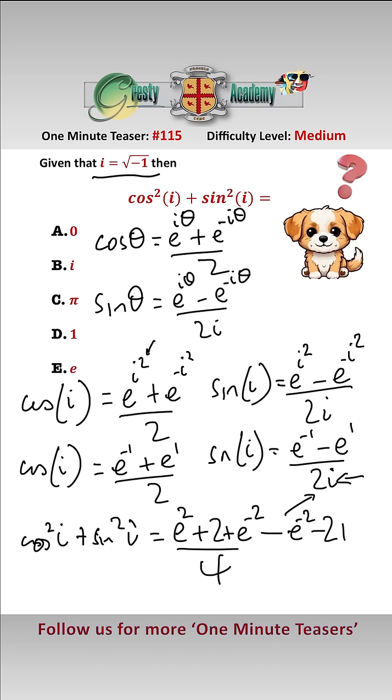And then when we add all of this up, these cancel and these cancel, leaving us with 2 over 4 plus 2 over 4, which equals 1.